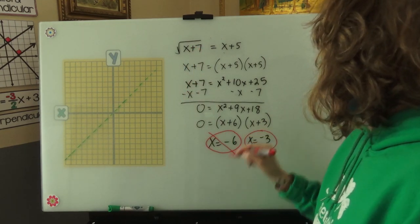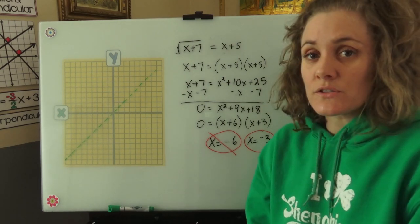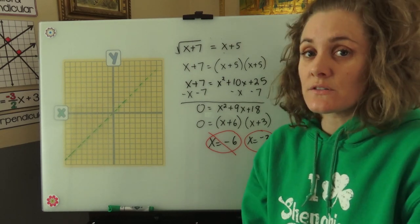And the negative 3 will make the equation true. x equals negative 3 is our solution and x equals negative 6 is our extraneous solution.